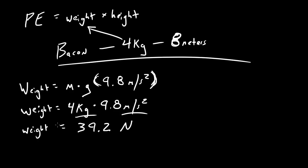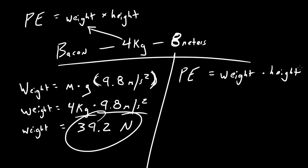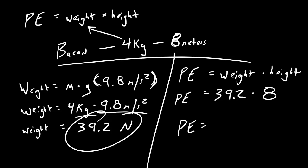So now we have the weight of the bacon: 39.2 newtons. We can now figure out the potential energy. When this bacon falls down from that pole, how much energy is it going to produce? The potential energy, when it's sitting on top of the pole, is equal to weight times height. So the potential energy equals 39.2 times 8 meters. When we multiply these two numbers — 39.2 times 8 — we figure out that a piece of bacon sitting on a pole 8 meters high with a mass of 4 kilograms has a potential energy of 313.6 joules.